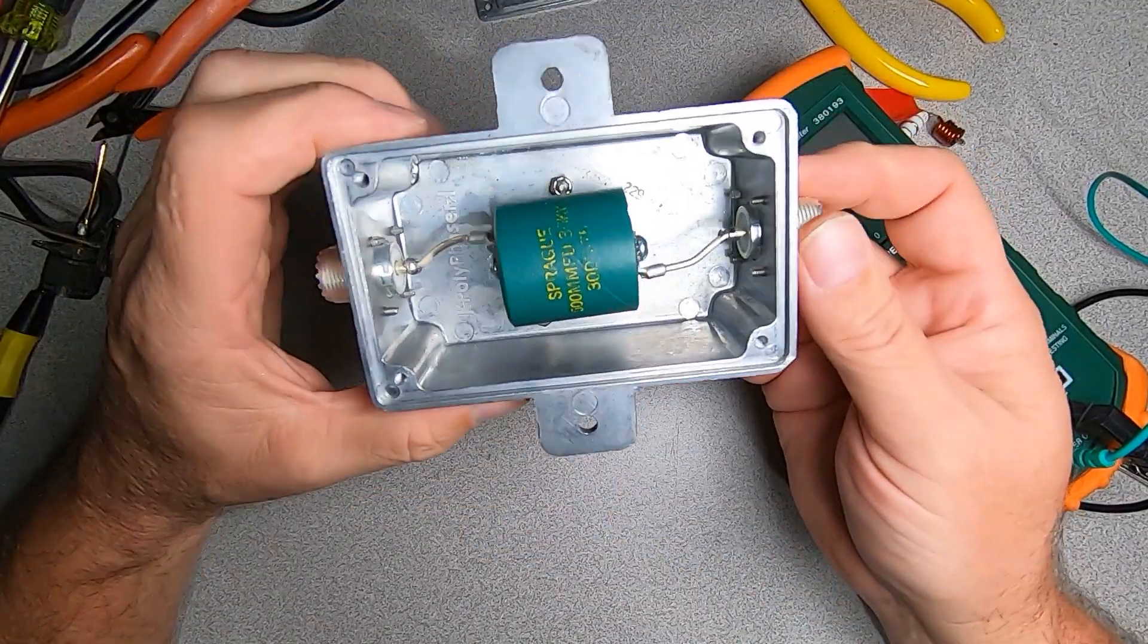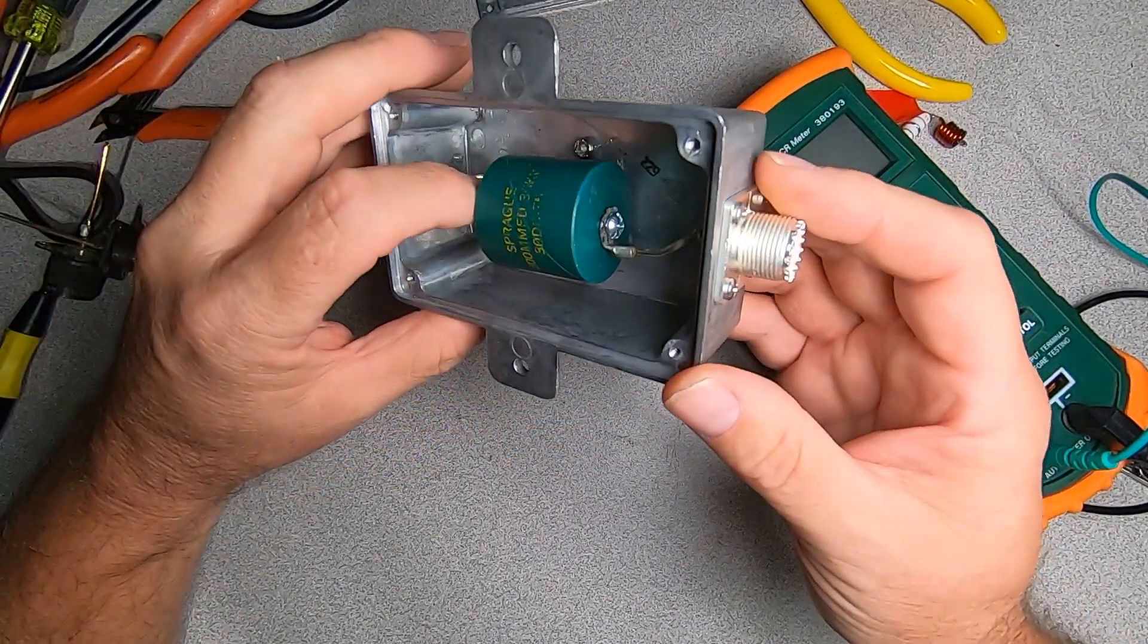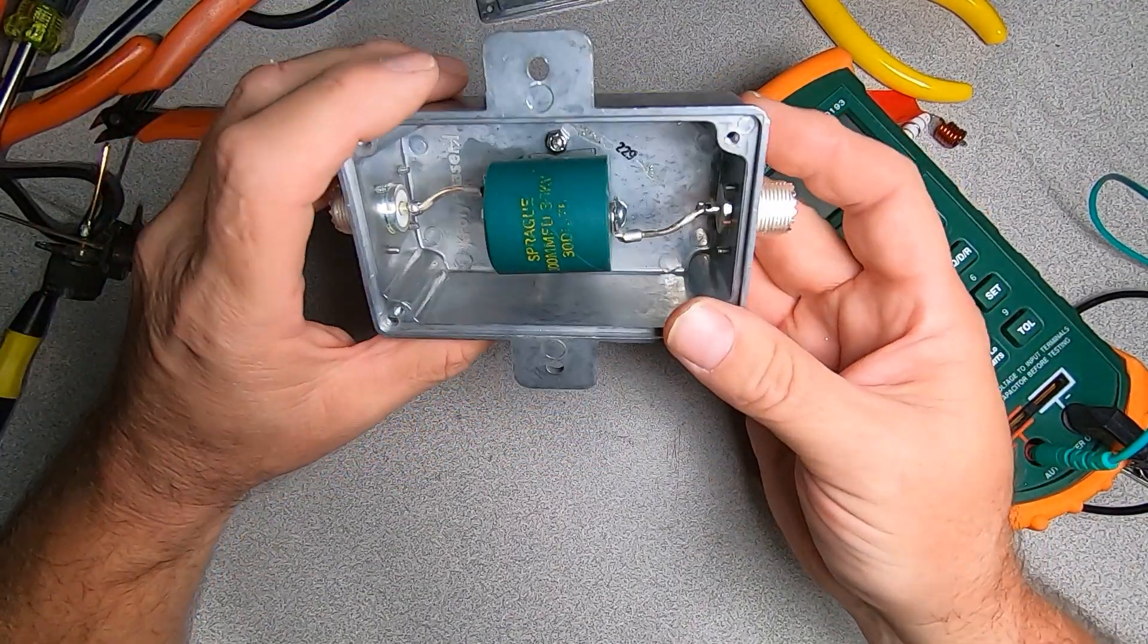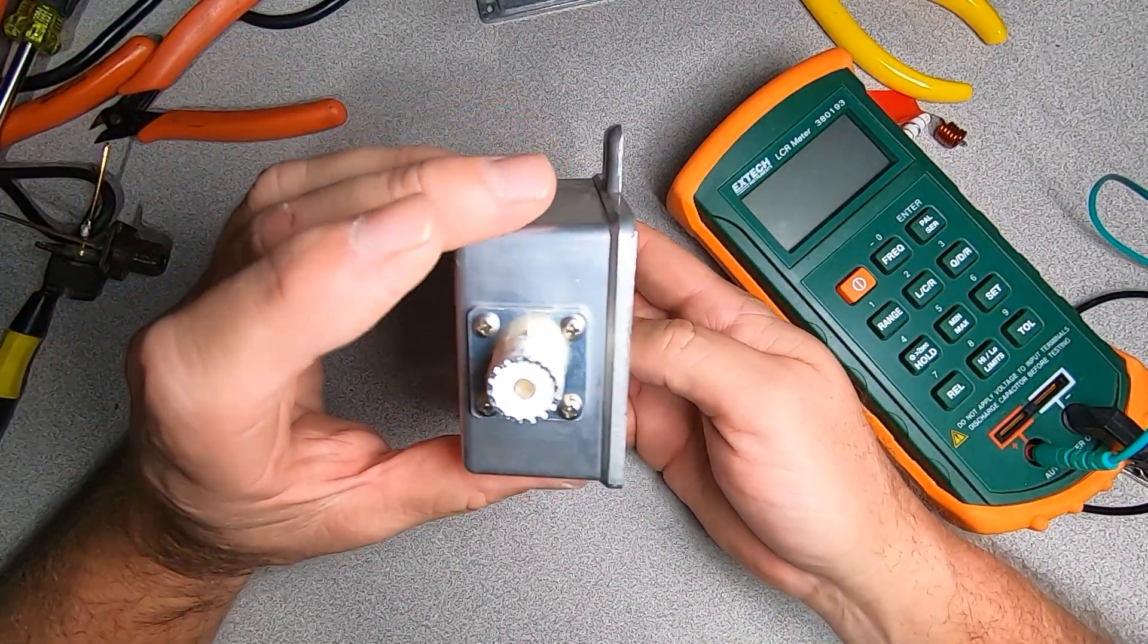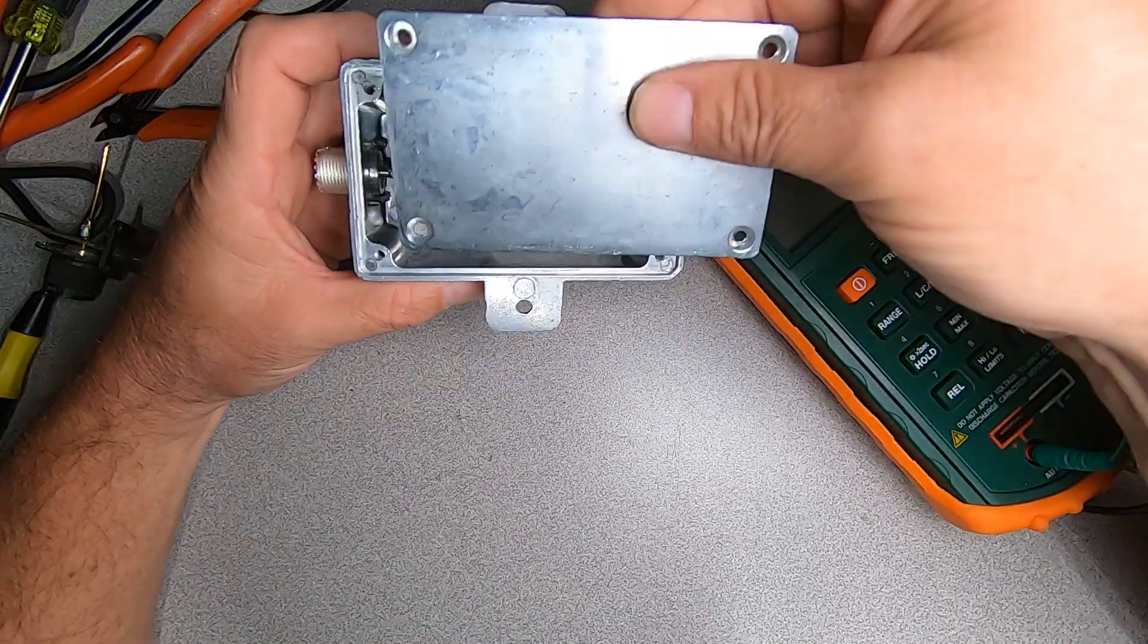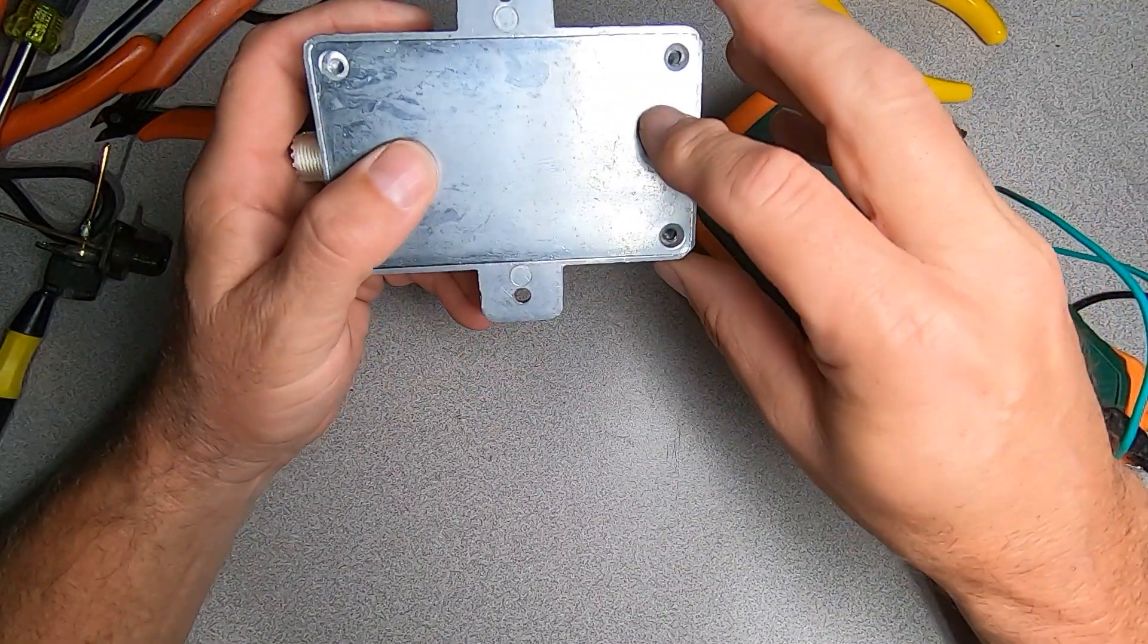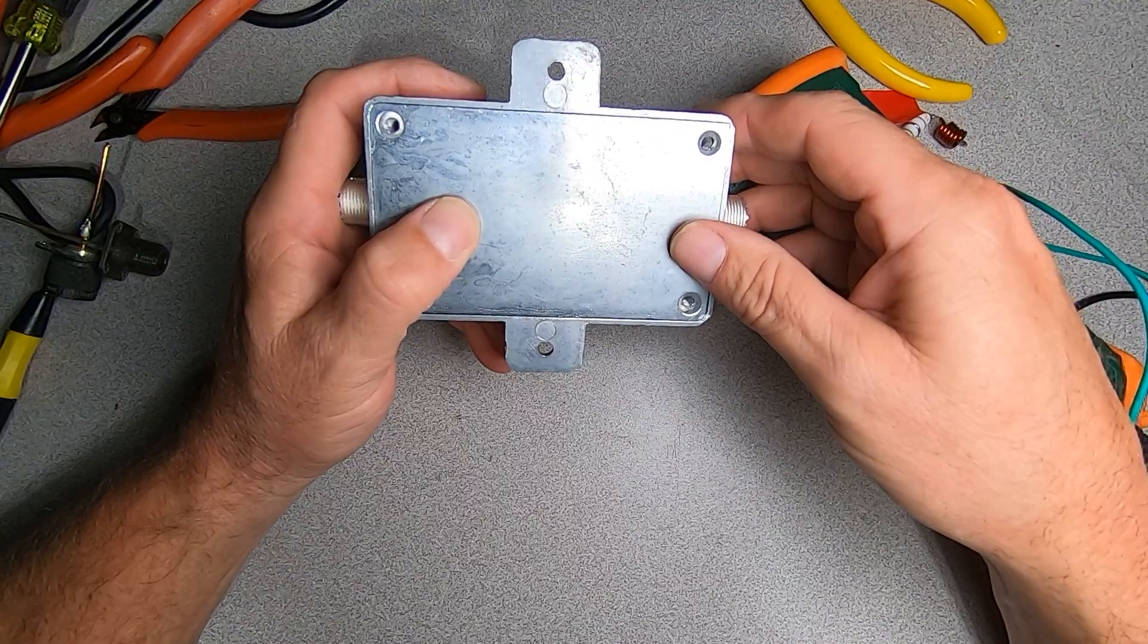Well we got our project, the physical part of it done. We've got our capacitor installed in series, got our RF connectors tightened up on either end and all we got to do now is put the lid on the back side of it here, secure it up and then take it outside and test it.